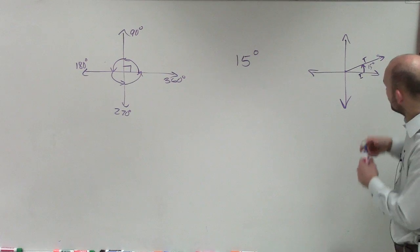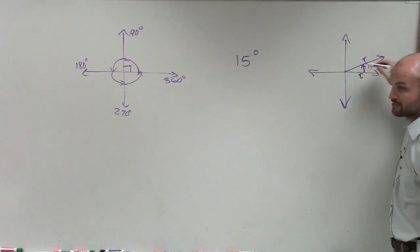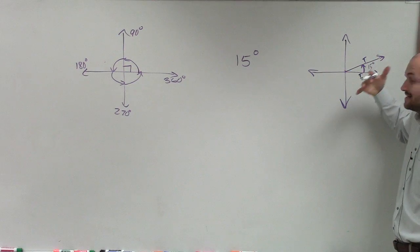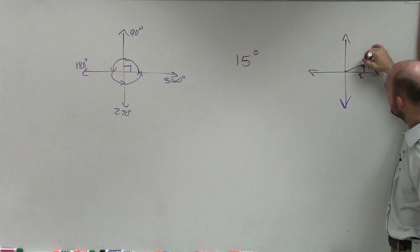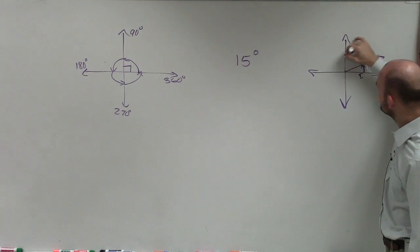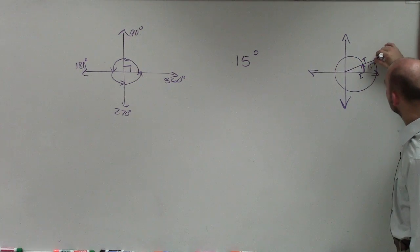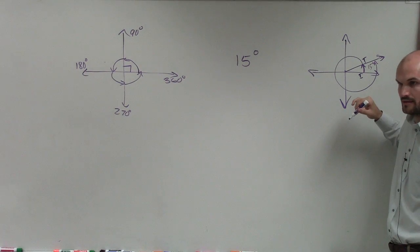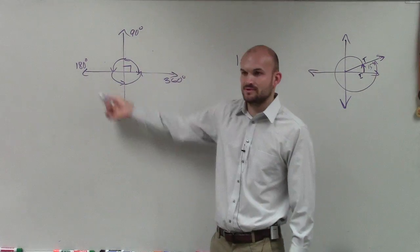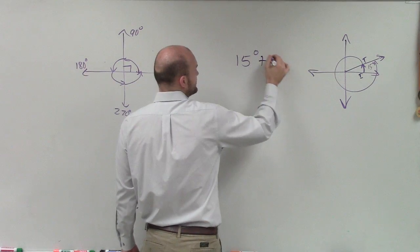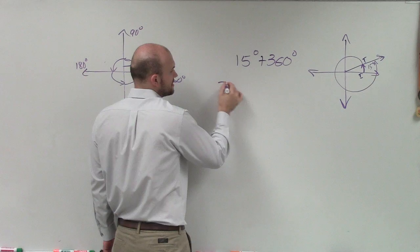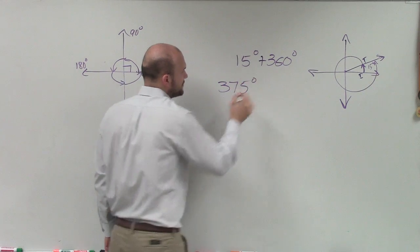So if I rotate my angle from here to here, all right, remember, I need to find another angle that has the exact same initial and terminal side. So if I just go from here, if I add 360 to it, I'm going to come back to the exact same point, right, because 360 wraps around the whole circle. So therefore, here I can just take 15 degrees and add 360 degrees. So that's going to give me 375 degrees.